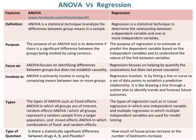ANOVA focuses on identifying differences between groups but does not establish causality. Whereas, regression focuses on quantifying the associations but does not prove causation. ANOVA primarily involves comparing means between two or more groups, whereas regression involves fitting a line or curve to a set of data points to establish a predictive relationship — like drawing a line through a scatter plot to identify trends and forecast future outcomes.